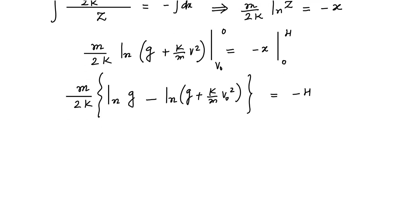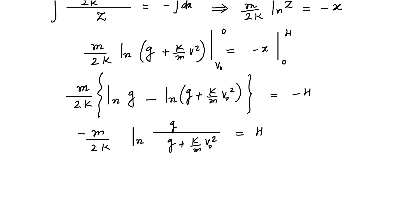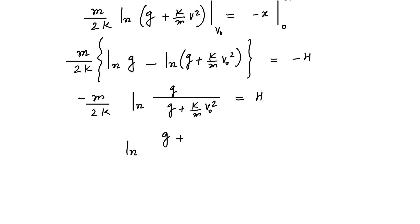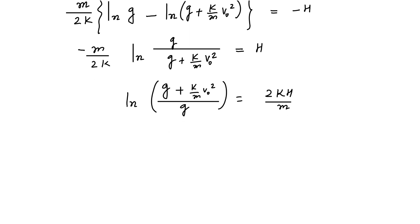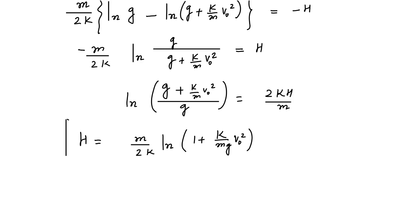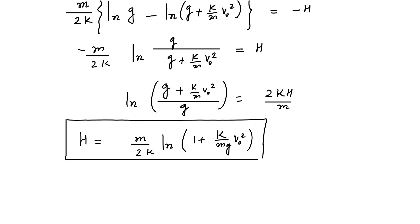Using the property ln(a) minus ln(b) equals ln(a/b), and absorbing the minus sign inside the log, we get: ln((g + (k/m)v0²)/g) equals 2kh/m. Therefore the maximum height h equals (m/2k)·ln(1 + (k/m)v0²/g). This is the maximum height the ball will attain, after which it comes to rest and starts the downward journey.